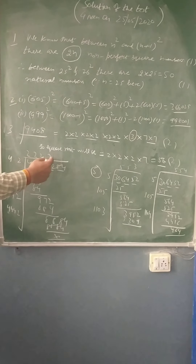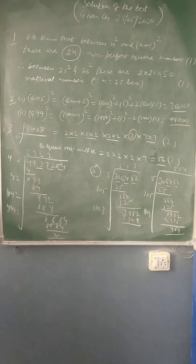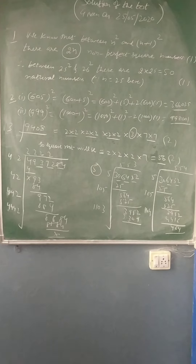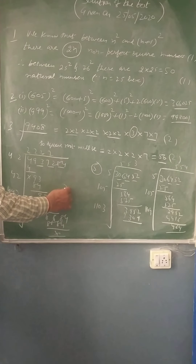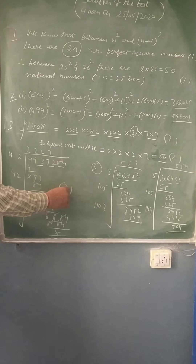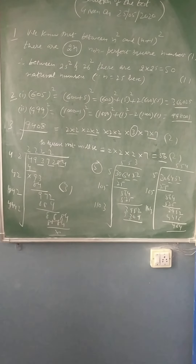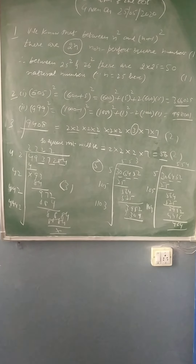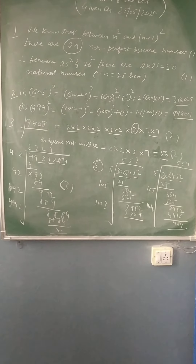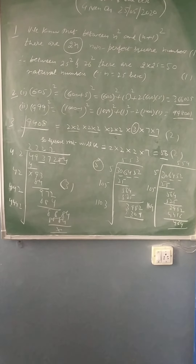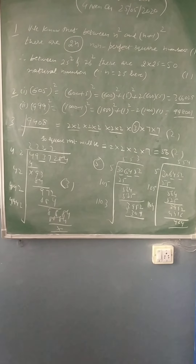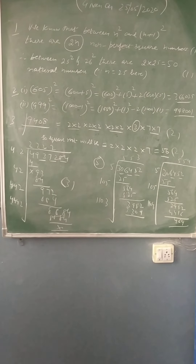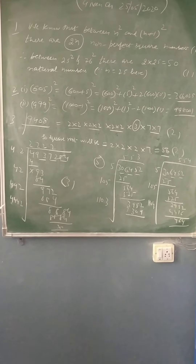Since the remainder is 0, it is a perfect square and the square root of 4,937,284 is 2222. Please check your steps carefully. This question was of 3 marks; if every step is correct then only you can award full 3 marks, as no step marking can be done if a mistake is present anywhere in the division process.